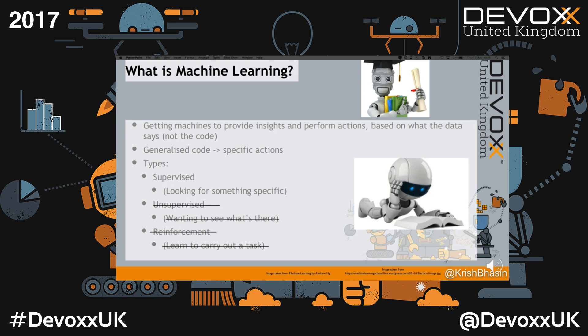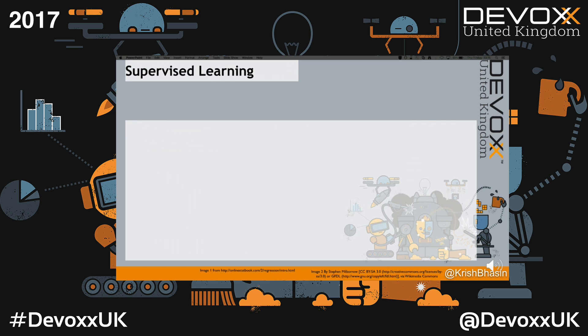We won't be looking at unsupervised or reinforcement learning here because they aren't the nicest place to start — I haven't touched them too much myself. So talking about supervised learning, there are broadly two main kinds: classification and regression.